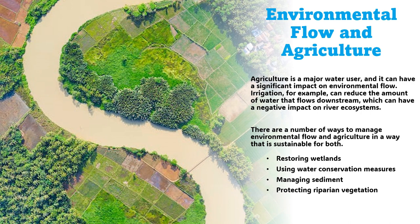Some of the benefits of managing environmental flow and agriculture in a sustainable way include improved fish populations, increased biodiversity as a healthy river ecosystem supports a wide variety of plants and animals, improved water quality as environmental flow helps to flush out pollutants and can allow wastewater to be used for irrigation, reduced flooding as environmental flow helps to regulate water levels, and improved recreation opportunities such as swimming, fishing, and boating.